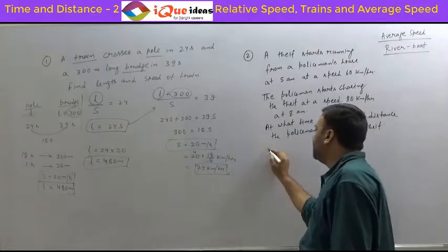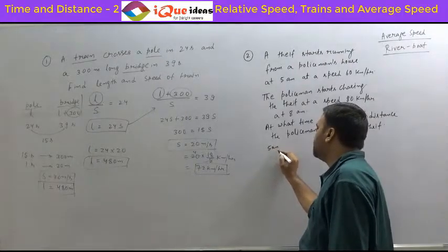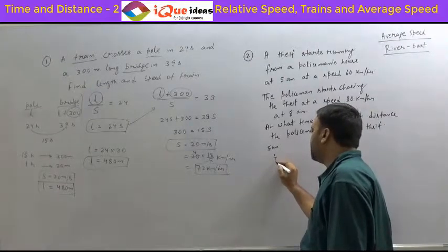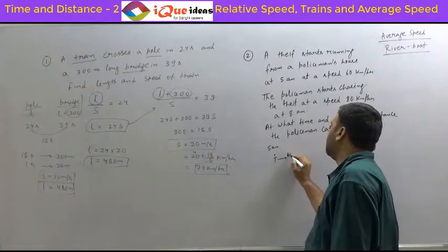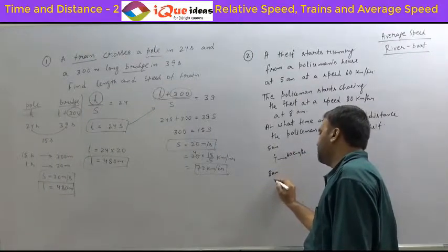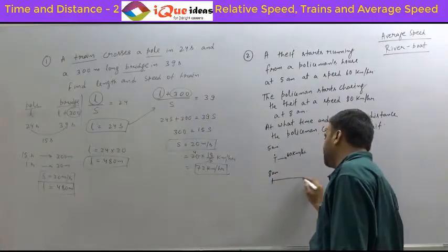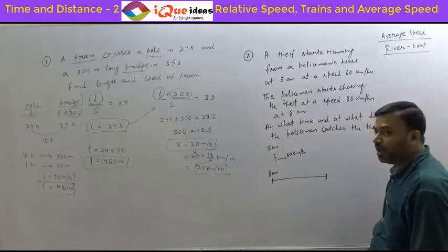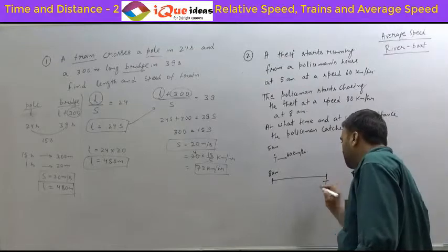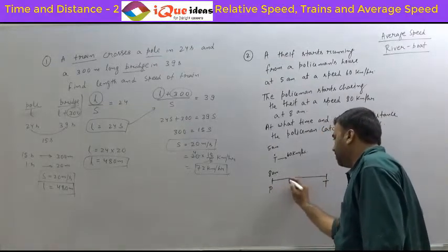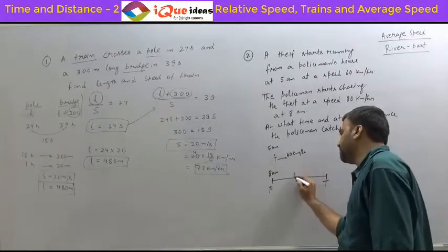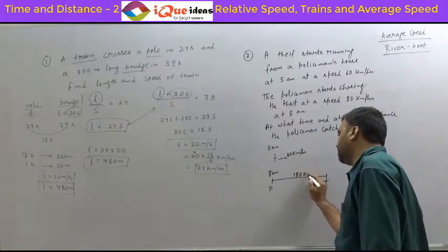Now look at the situation at 5 a.m. This is the house of the policeman and the thief starts running from here at a speed of 60 kilometers per hour. The thief has already travelled 3 hours by the time the policeman starts. So in 3 hours the thief would be ahead, while the policeman is still at the house. This distance is 180 kilometers — whatever distance the thief travels in 3 hours at 60 km/h.